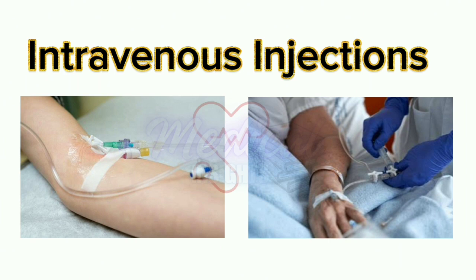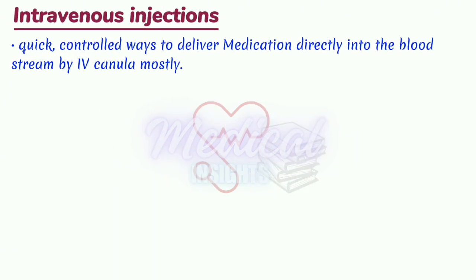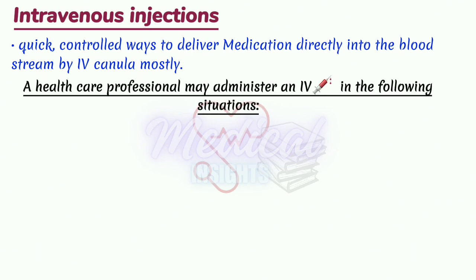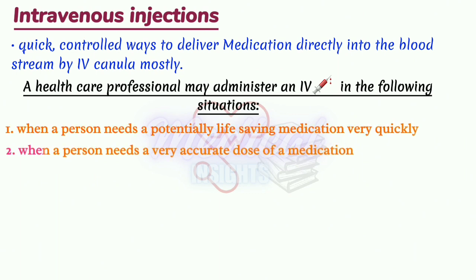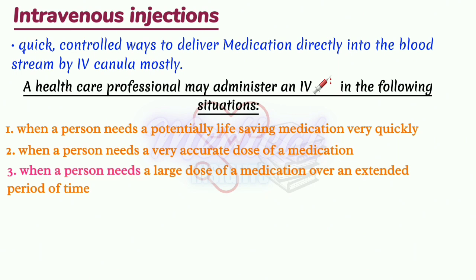Intravenous injections are quick controlled ways to deliver medication directly into the bloodstream by IV cannula mostly. A healthcare professional may administer an IV injection when a person needs a potentially life-saving medication very quickly, when a person needs a very accurate dose of a medication, or when a person needs a large dose of a medication over an extended period of time.